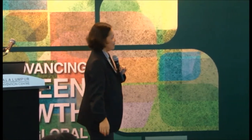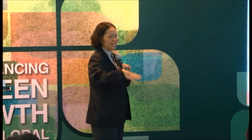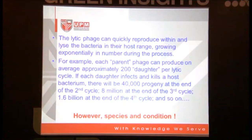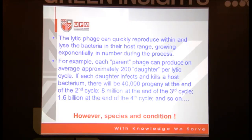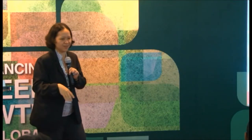The lytic phage can be quickly reproduced within virions in the host. For example, one parent phage attacks one bacteria, and from there it can produce about 200 daughters. So after one cycle you get 200; after the second cycle, about 40,000 progeny; and about 8 million for the third cycle, and so on.